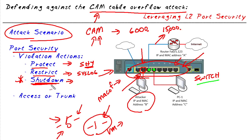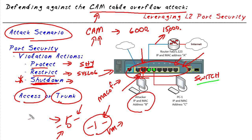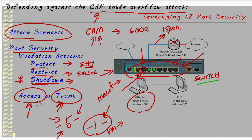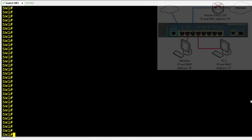One important thing to know about port security in a Cisco environment: the port must be configured as an access port or a trunk port — it cannot be a dynamic port. We need to hard-code it as access or trunk in order for port security to be enabled on that port.